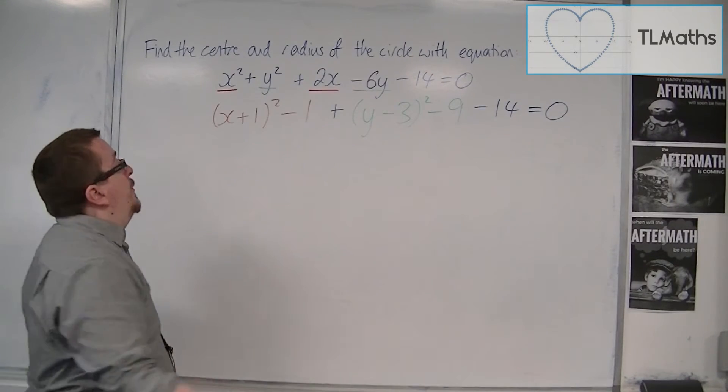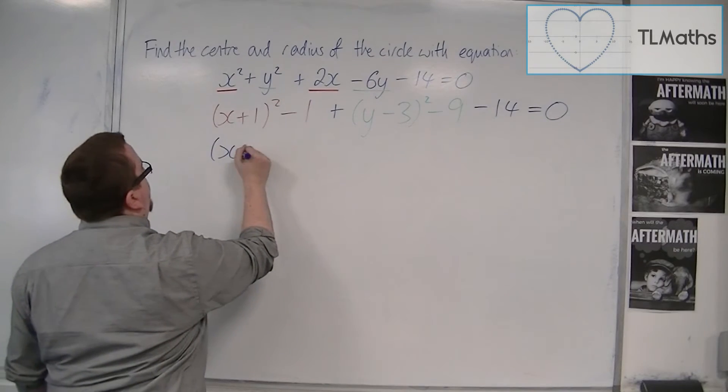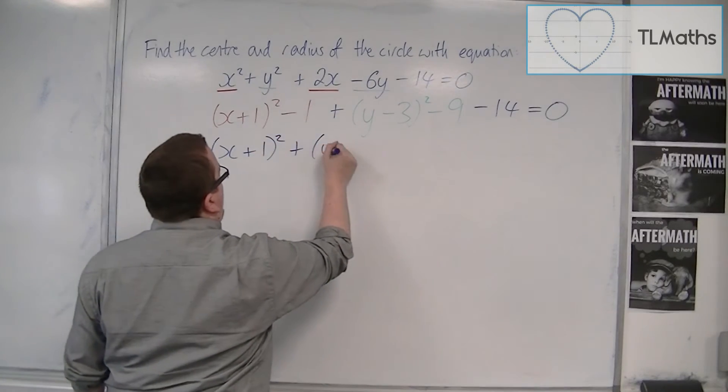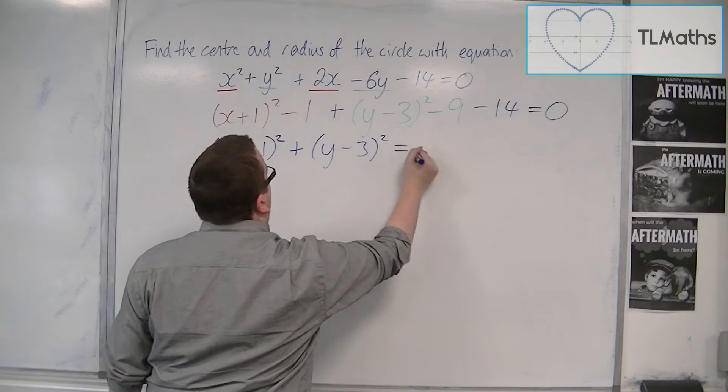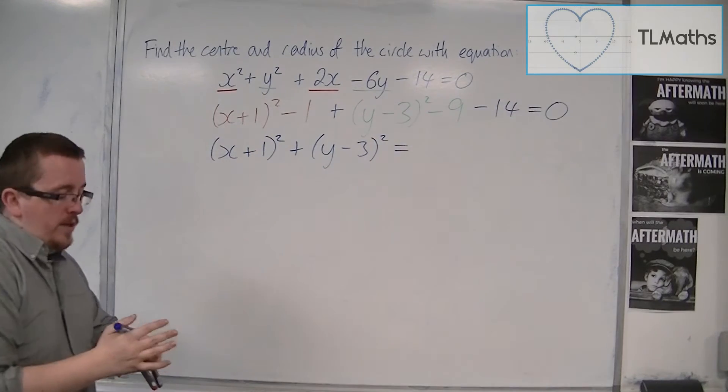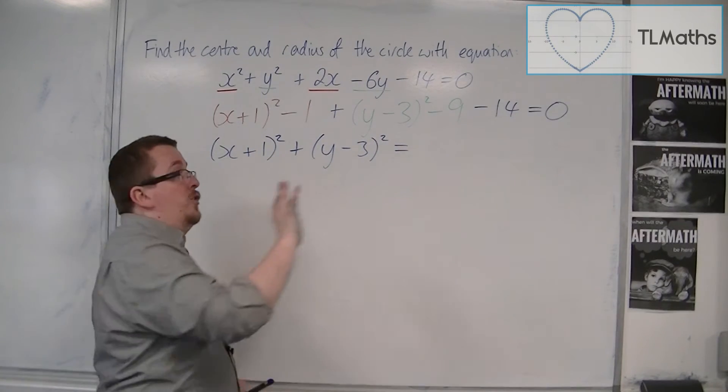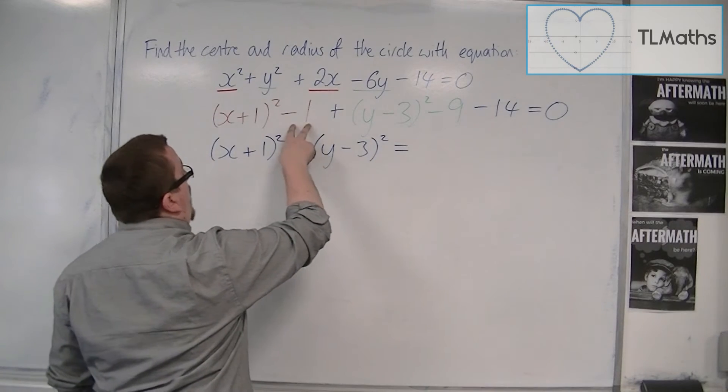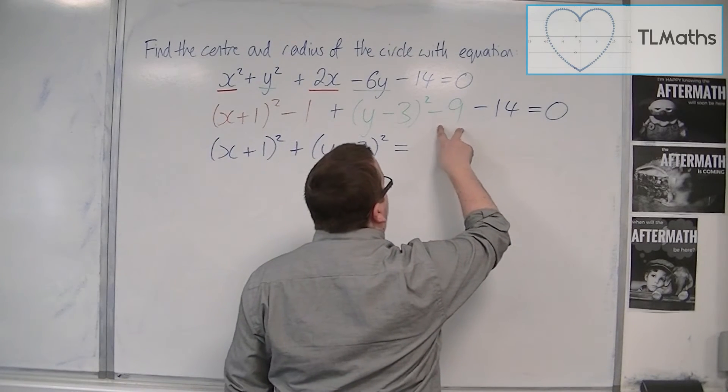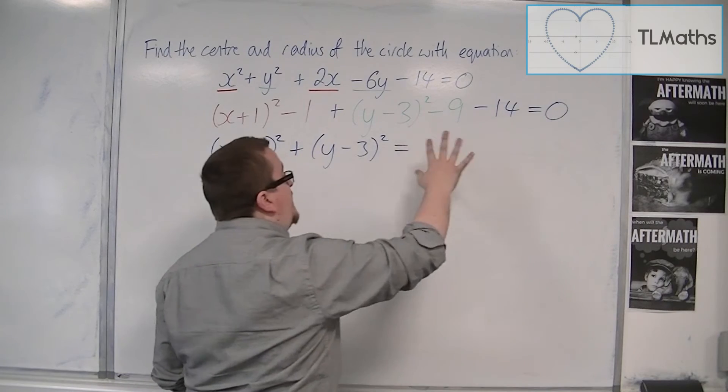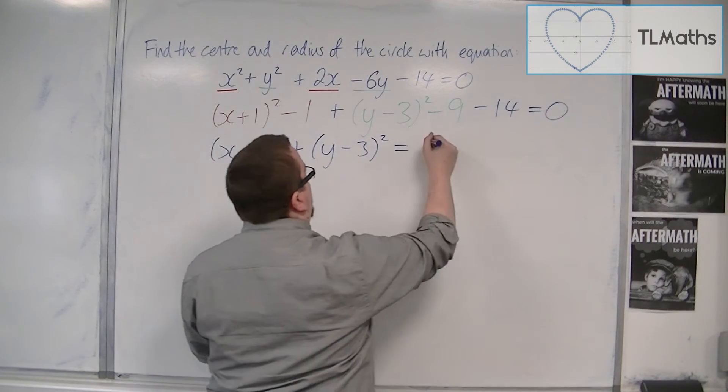So now what I want to do is keep the x plus 1 squared and the y minus 3 squared on the left-hand side of the equation and move everything else onto the right. I've got minus 1, minus 9, so minus 10. Take away 14, so minus 24. Add 24 to both sides.